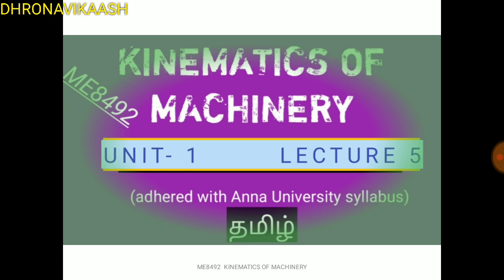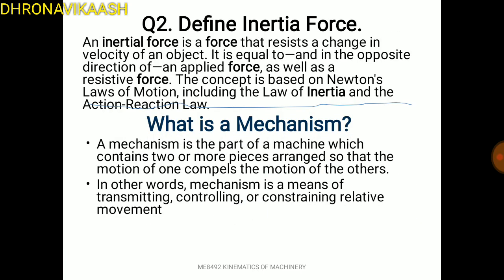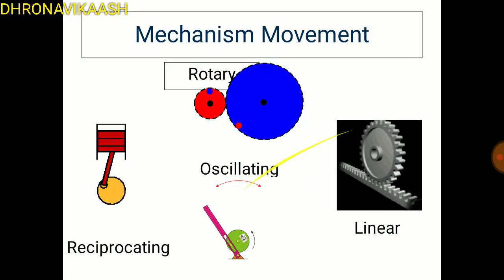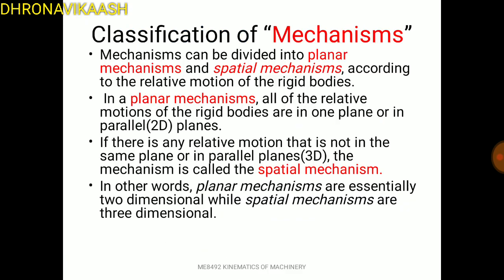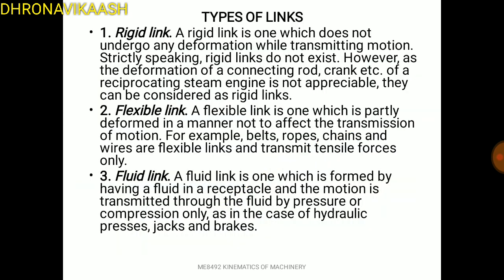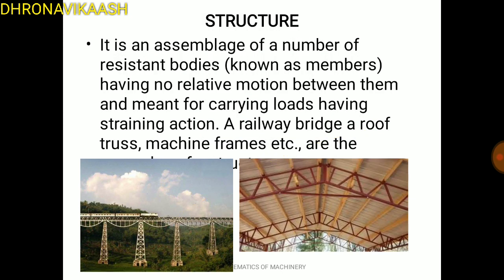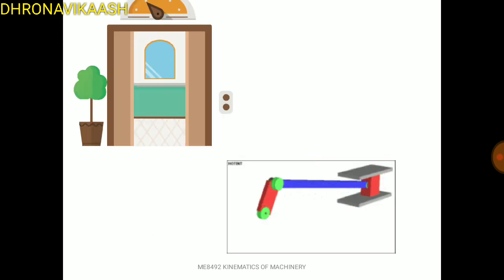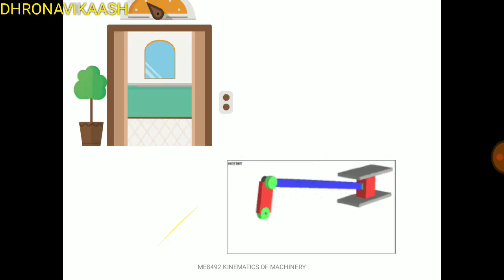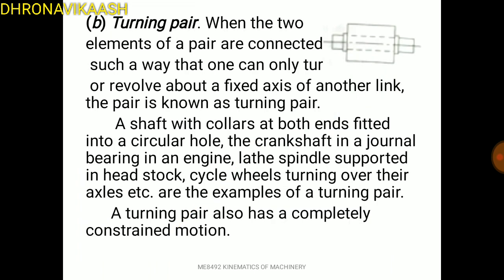Let's see what we have here at a glance: Relative Motion, Kinematics and Dynamics, Inertia Force and Mechanisms, Classification of Mechanisms, Kinematic Link and Element, Rigid Link, Flexible Link, Fluid Link, Types of Link, Structure, Difference between Machine and Structure, Constrained Motion and Animation. Here we have a video — let's see the animation video. There are kinematic pairs and their types.